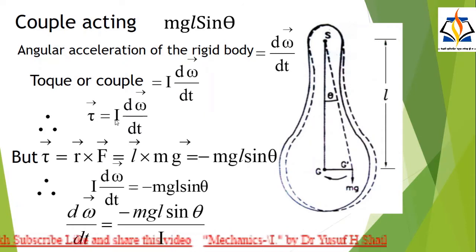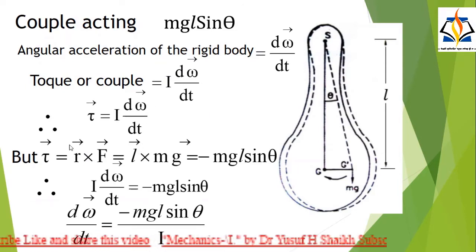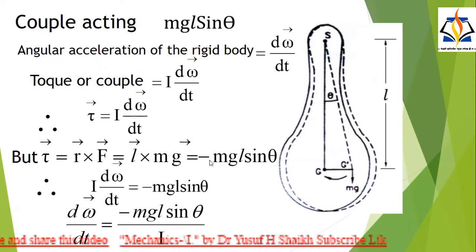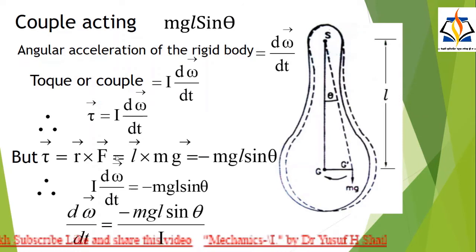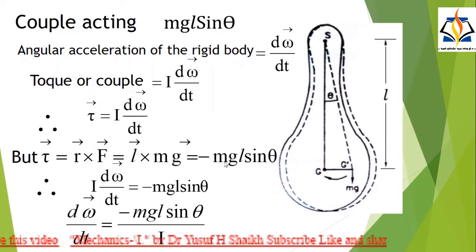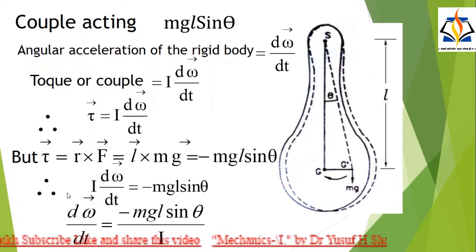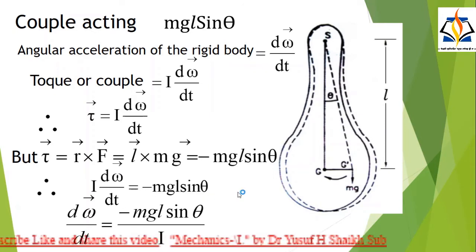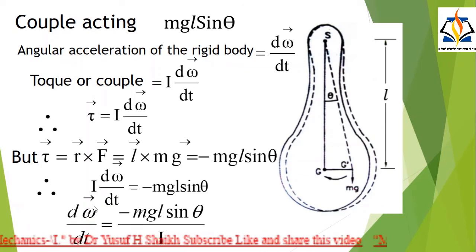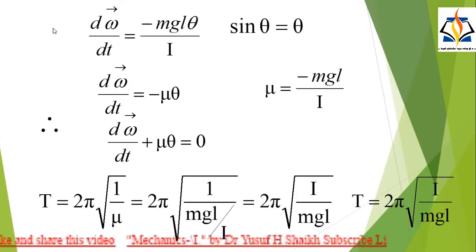The torque or couple is equal to I·(dω/dt). Therefore, τ = I·(dω/dt). But τ is also equal to R vector cross M vector, which equals L vector cross MG vector, that is equal to −MgL sinθ. This MgL sinθ is its component. Therefore, I·(dω/dt) = −MgL sinθ. From this equation, dω/dt = −MgL sinθ / I. This is the equation of motion of a compound pendulum.